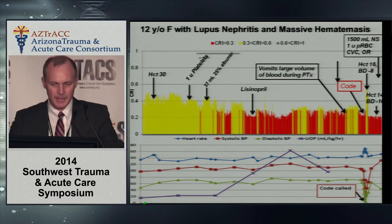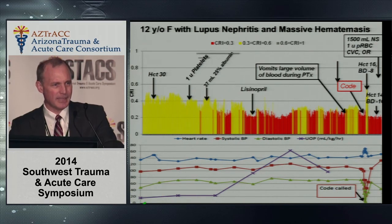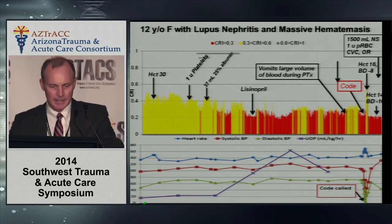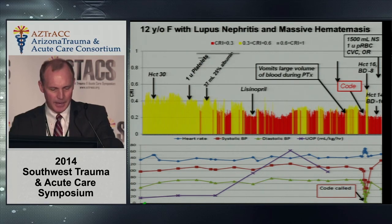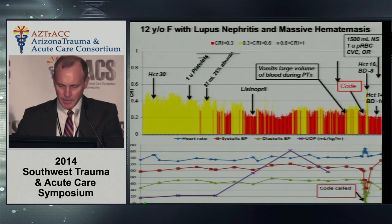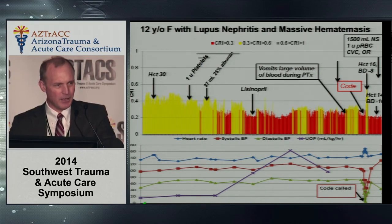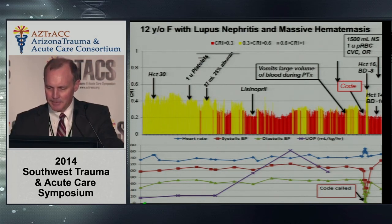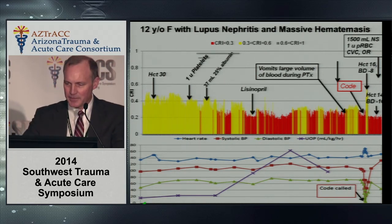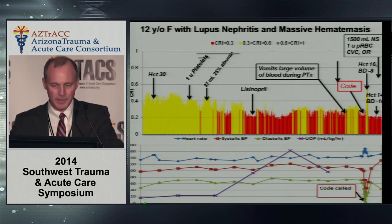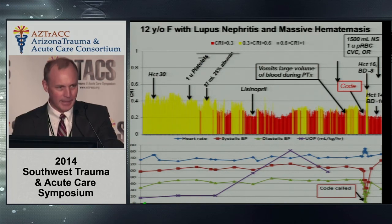A 12-year-old female was admitted with a massive upper GI bleed on the medicine service. A couple days after admission, her hematocrit was 30. She received platelets and albumin for a heart rate in the 140s. Unbeknownst to us, her CRI started to drop. She had a large emesis and coded. At that point her hematocrit had drifted down to 16 and her base deficit was minus 8. She was resuscitated and rushed to the OR, where she died. Looking back, the CRI had started to fall approximately 16 hours before we detected that she was bleeding.